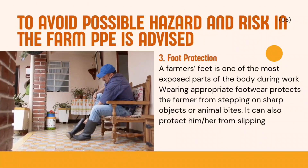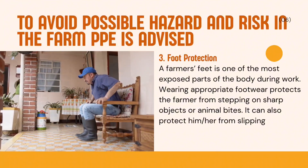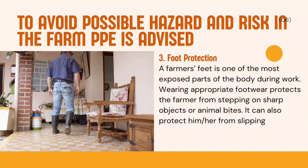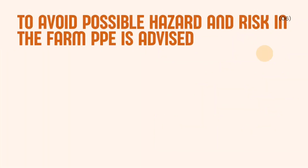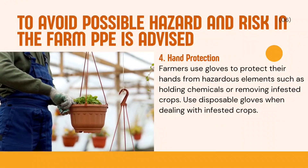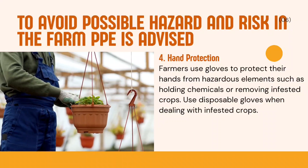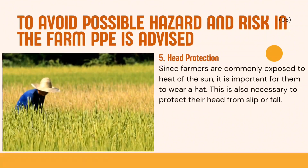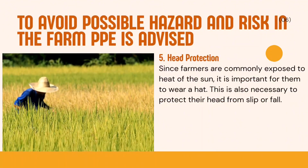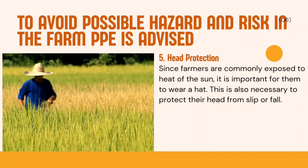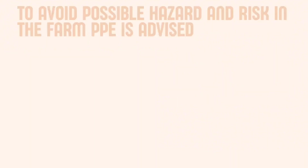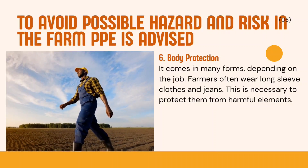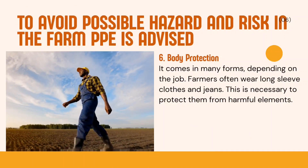3. Foot protection. A farmer's feet is one of the most exposed parts of the body during work. Wearing appropriate footwear protects the farmer from stepping on sharp objects or animal bites. It can also protect him or her from slipping. 4. Hand protection. Farmers use gloves to protect their hands from hazardous elements such as holding chemicals or removing infested crops. Use disposable gloves when dealing with infested crops. 5. Head protection. Since farmers are commonly exposed to the heat of the sun, it is important for them to wear a hat. This is also necessary to protect their head from slip or fall. 6. Body protection. It comes in many forms, depending on the job. Farmers often wear long sleeve clothes and jeans. This is necessary to protect them from harmful elements.